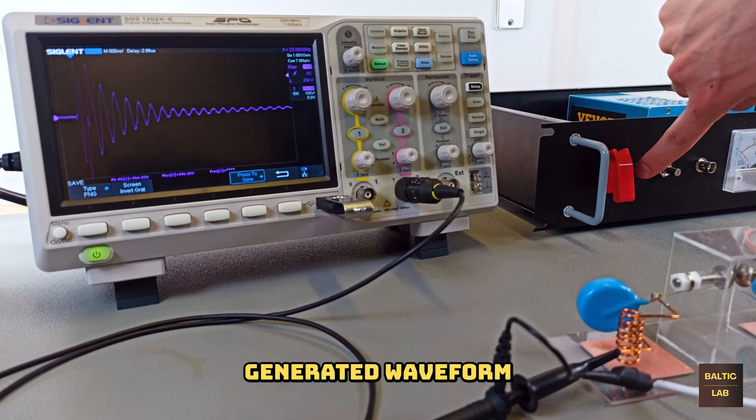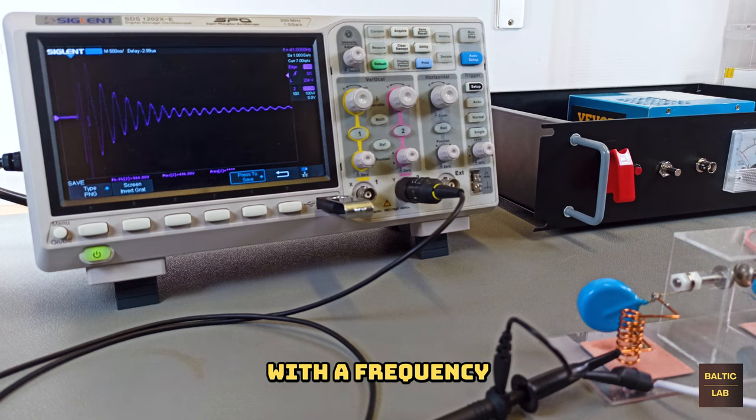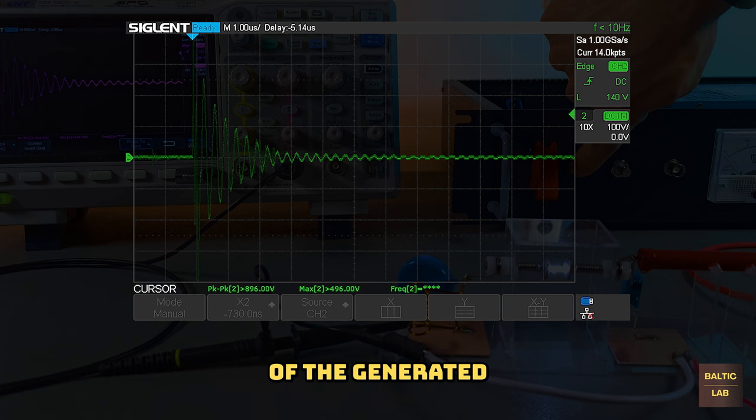Capturing the generated waveform with an oscilloscope confirms the generation of a signal with a frequency of around 3 MHz. The amplitude envelope of the generated signal follows a quick exponential decay.